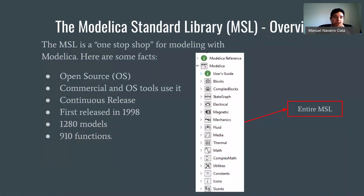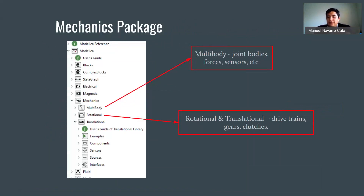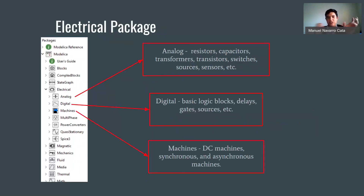For example, it comes with a mechanics package. It includes multibody and rotational and translational. Multibody refers to joint bodies, forces, and sensors, while rotational and translational talks about drivetrains, gears, and clutches. All of these have different elements that you can model, kind of like templates that you can start changing parameters to adapt to your needs.